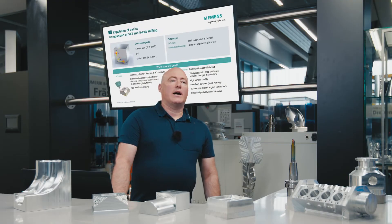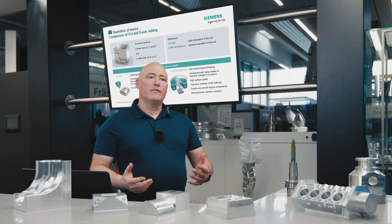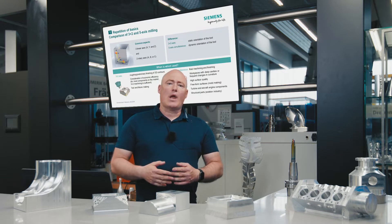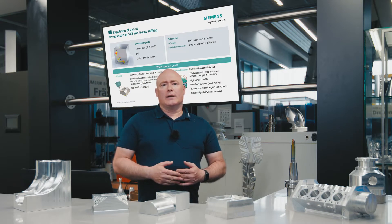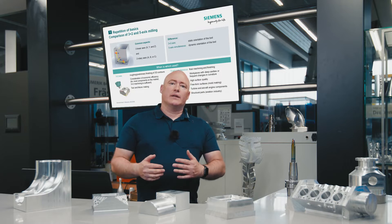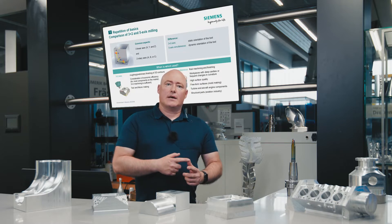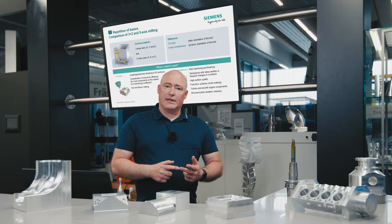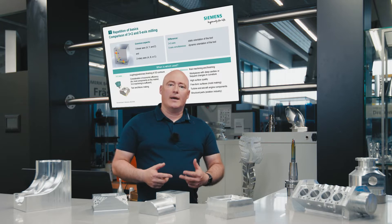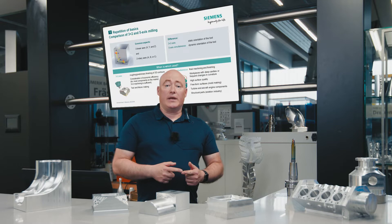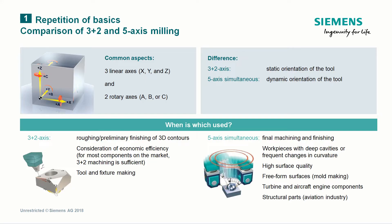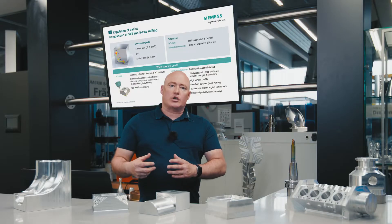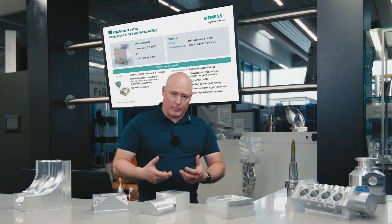We start by comparing 3+2 machining with five-axis milling. What the two manufacturing methods have in common is that they both have three linear axes — X, Y, and Z — and both methods also have two rotary axes, A, B, or C. The difference between 3+2 and 5-axis machining is static orientation of the tool in 3+2 and dynamic orientation of the tool in 5-axis simultaneous machining.